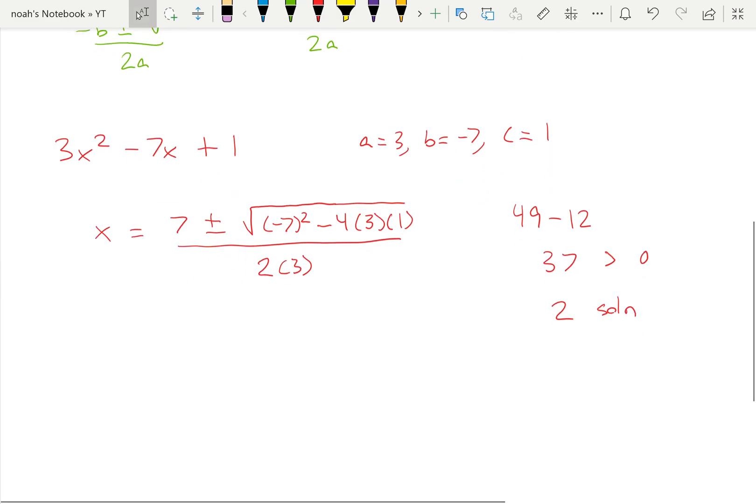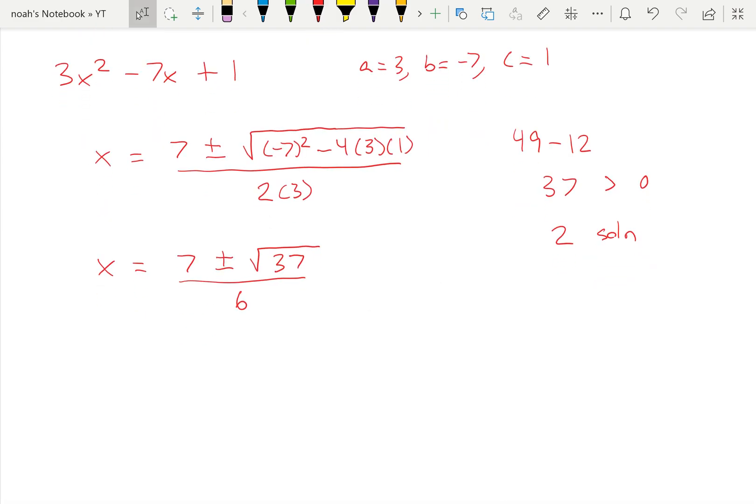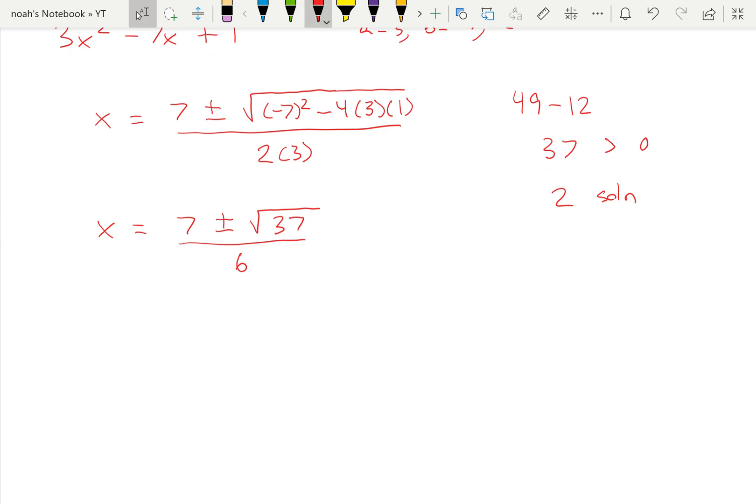So we've got x equal to 7 plus or minus square root of 37, divided by 6. And that's our final answer. You can also show it in this form as well: x1 equals 7 plus the square root of 37 over 6, and x2 equals 7 minus the square root of 37 over 6.